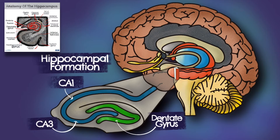Just superior to the CA sections, we can find the choroid plexus and the optic tract. Feel free to pause this video and screenshot this image so you can learn the anatomical positions of these structures.